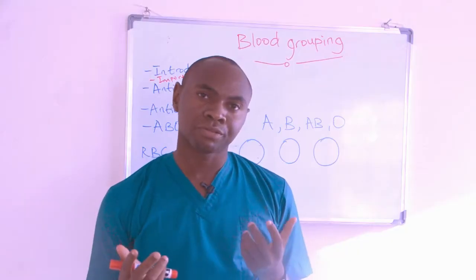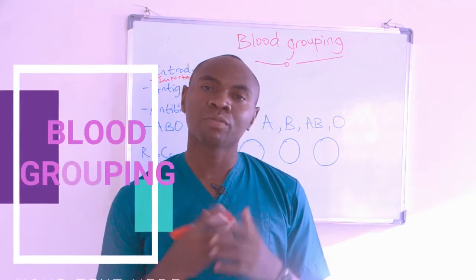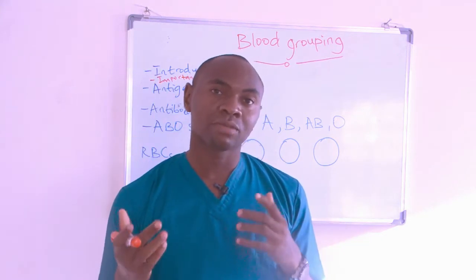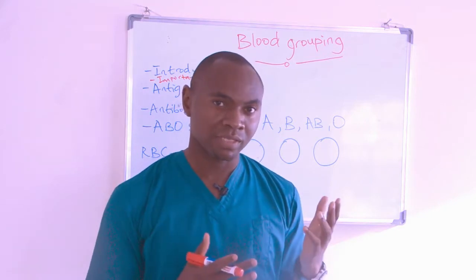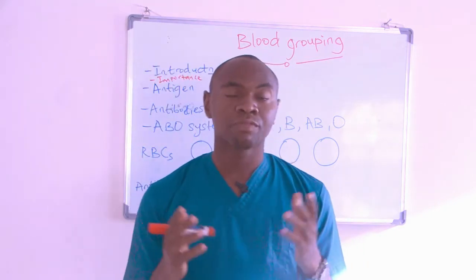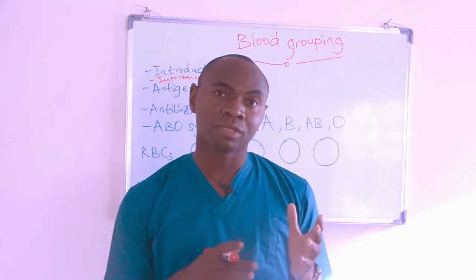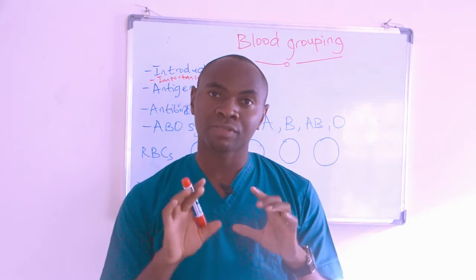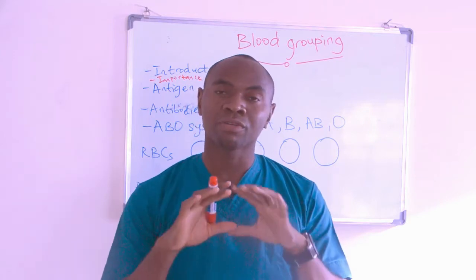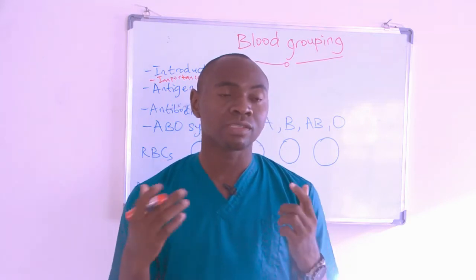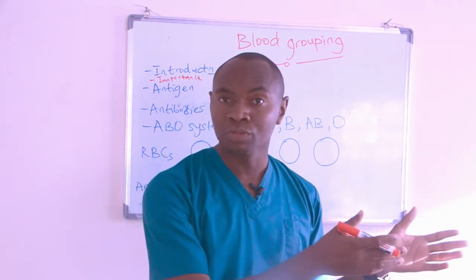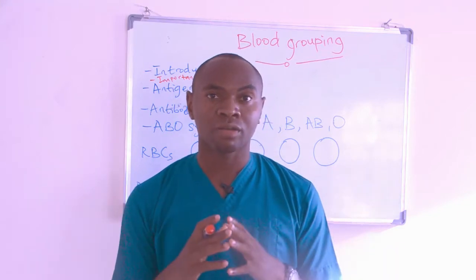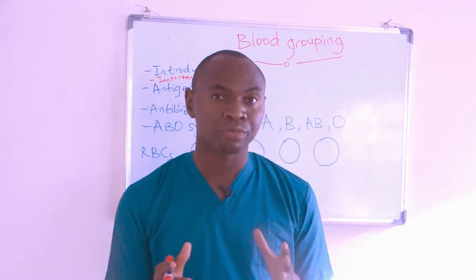By way of introduction, we all know that human beings are similar in some aspects and different or diverse in other aspects. Blood exists in every human being, but it has been discovered that we all have various types of blood — various identities with which we can say you are in this blood group, she's in this blood group, and we all have an individual blood group.